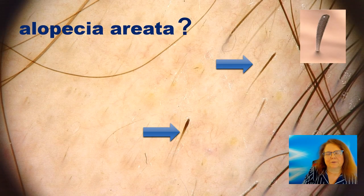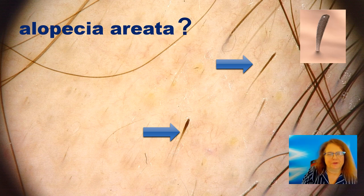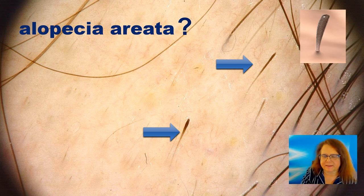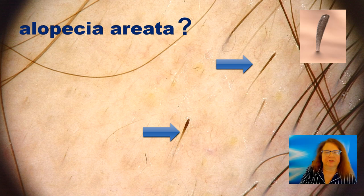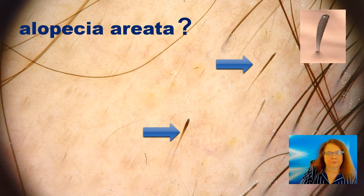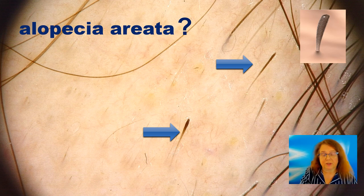This is how typical exclamation mark hairs look in trichoscopy. However, we can never be sure that exclamation mark hairs mean alopecia areata, because there are some other diseases in which exclamation mark hairs may be present — trichotillomania, toxic alopecia, drug-induced alopecia, chemotherapy-induced alopecia, and many more. So we have to look for other trichoscopy features of alopecia areata.